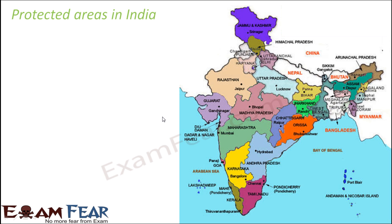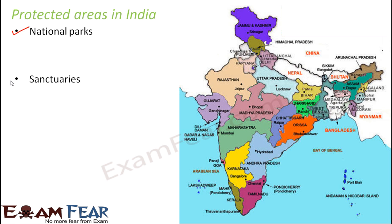Now let us look at the various protected areas which are present in our country. There are many protected areas in India. So what are those protected areas? One is national parks, one is wildlife sanctuaries, and the third one is biosphere reserves. So these are the three main protected areas.